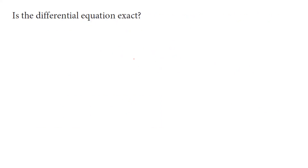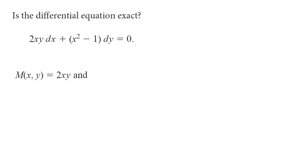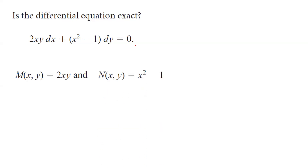Let's take a look at this example. Is the following differential equation exact? You have 2xy dx + (x² − y) dy = 0. Note that M is 2xy and N is x² − y.